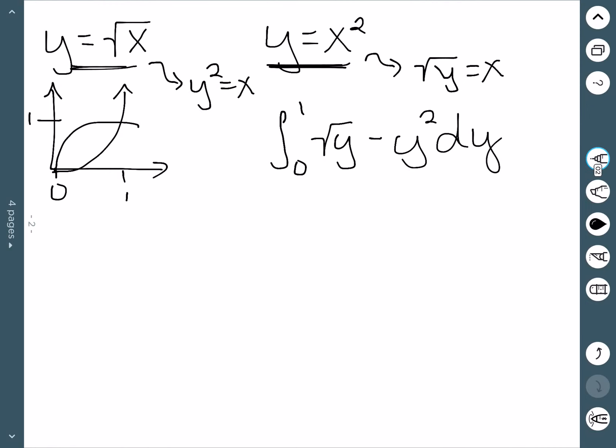Adding 1 to the exponent and dividing gives me (2/3)y^(3/2) minus (1/3)y³, going between 0 and 1. Sticking in 1 gives me 2/3 minus 1/3, which is an area of 1/3.